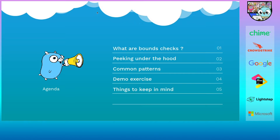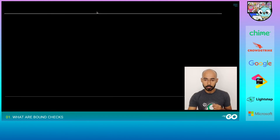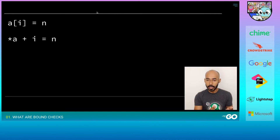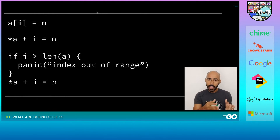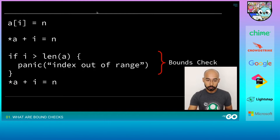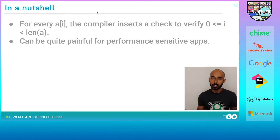So what are bounds checks? Let's take an example. Assume we are setting the value of a slice at a particular index. Intuitively you would assume the compiler to just get the base address of the underlying array, add the offset i, and set the value to n. But it actually adds an if condition to check if i is within the length of the array — and this if condition is what we call a bounds check.